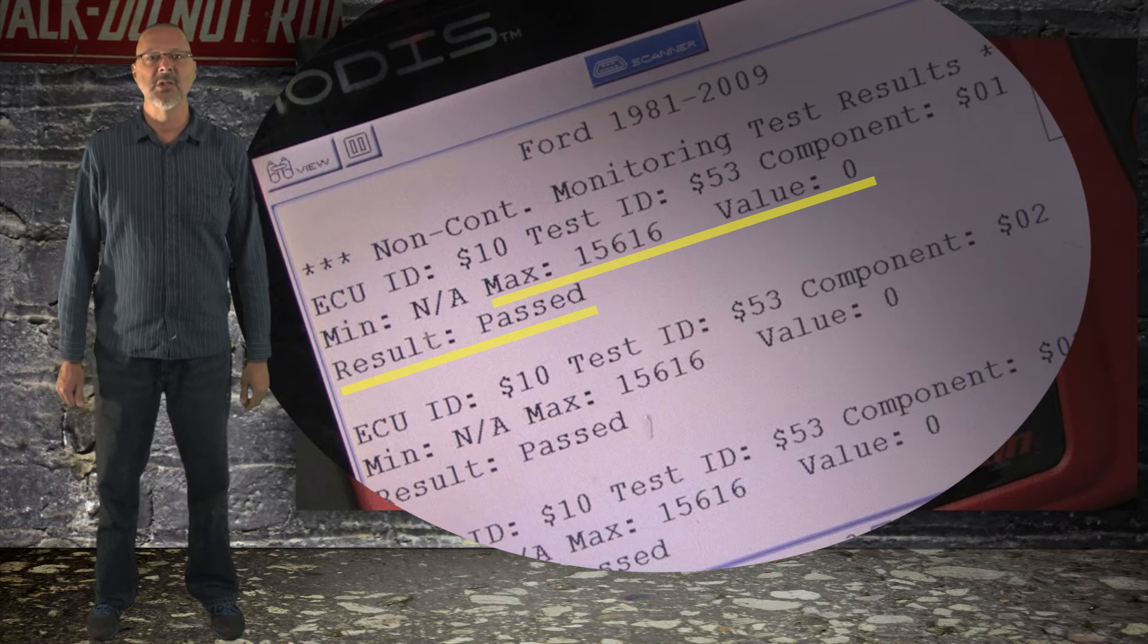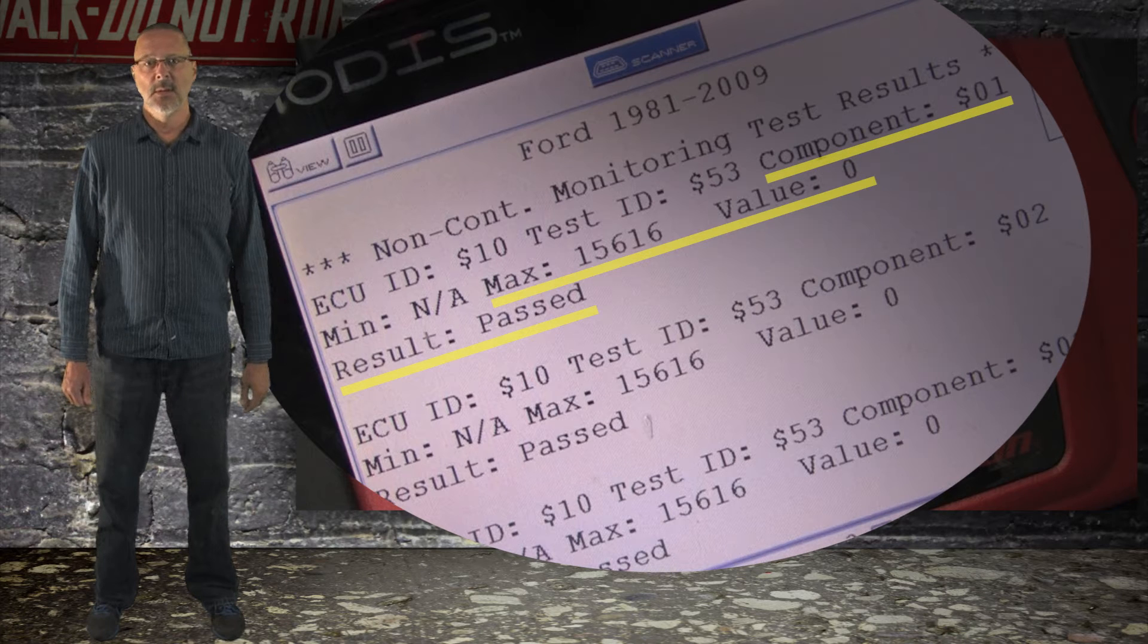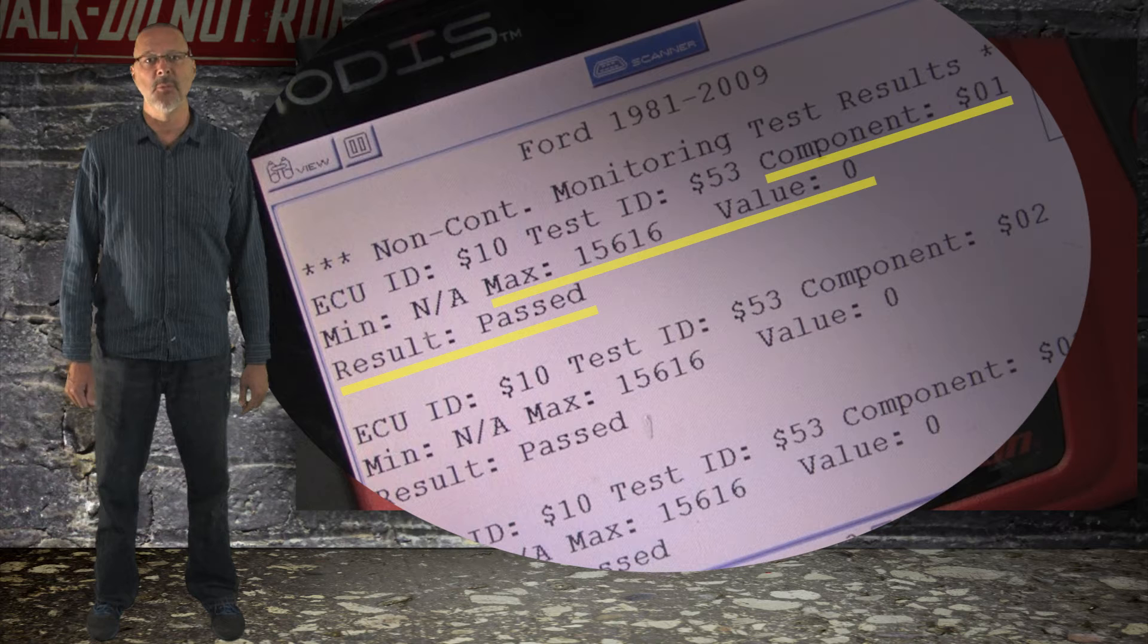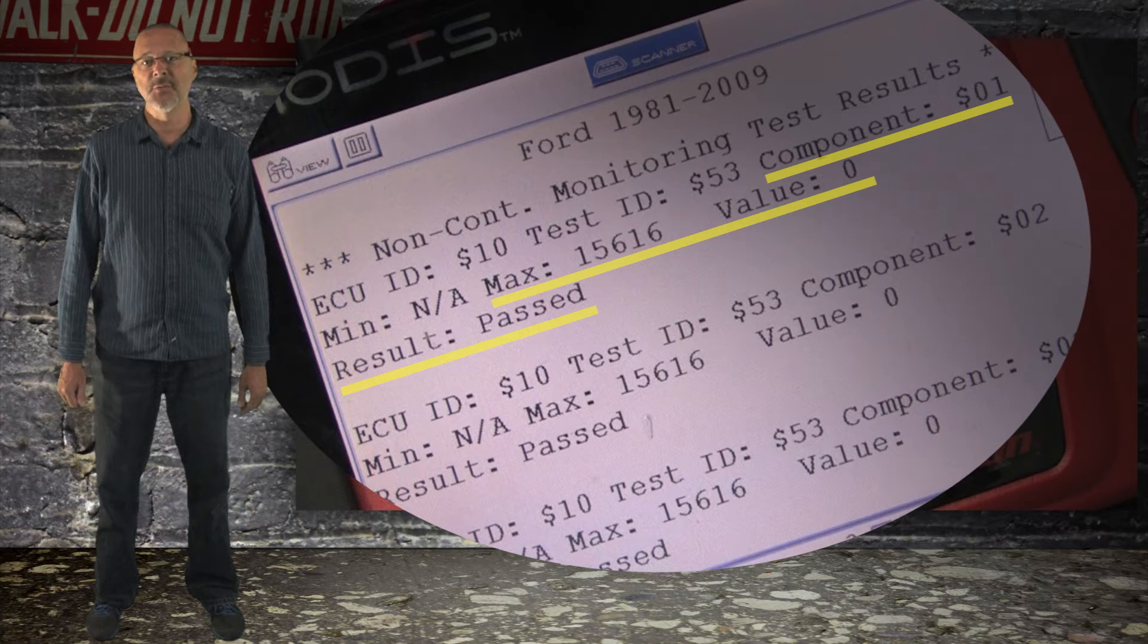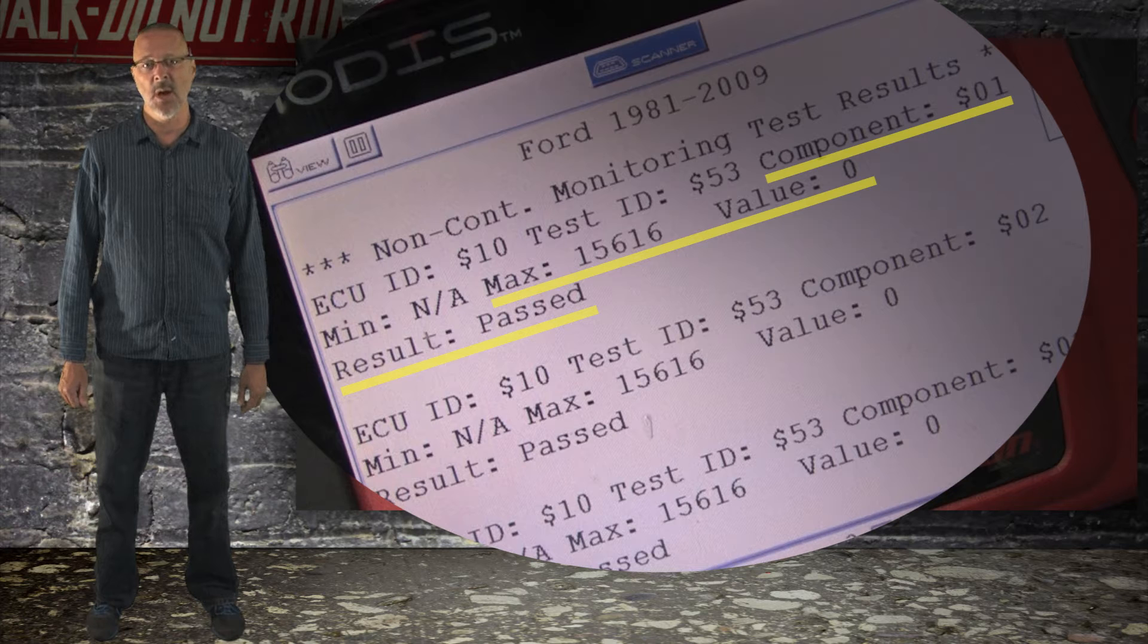The component reading indicates the cylinder and as you can see, this is cylinder number one. The MAX is really a percentage of misfires which can occur before the check engine light illuminates. The value is a percentage of misfires which have occurred on that cylinder and the results indicate whether the percentage of misfires has reached a limit to turn the check engine light on.